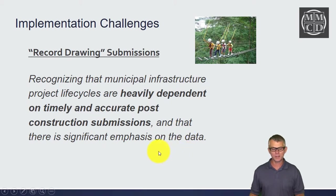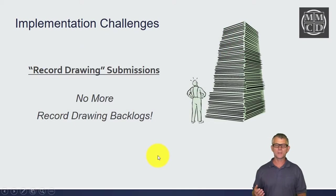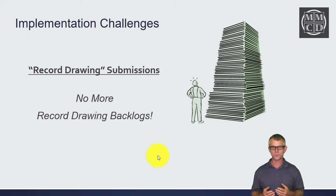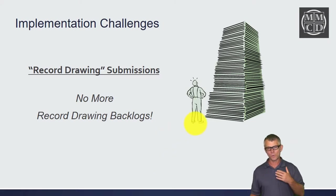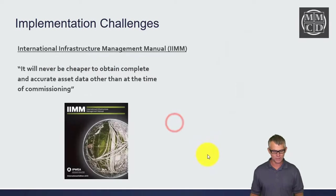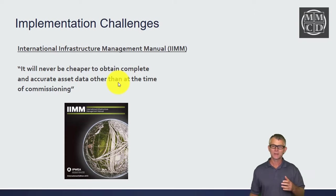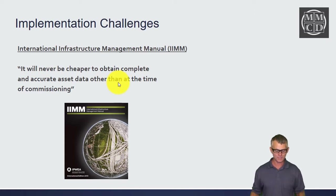We need to recognize that infrastructure life cycles are heavily dependent on timely and accurate post-construction submissions. There can't be backlogs because the data is of value immediately — for example, if new sanitary, storm, and water infrastructure is created, that's very useful for a nearby development group to be aware of prior to development. As it says in the DDINN manual: it will never be cheaper to obtain complete and accurate asset data other than at the time of commissioning. So let's collect all that information while the documents are active and submit it as part of the project.